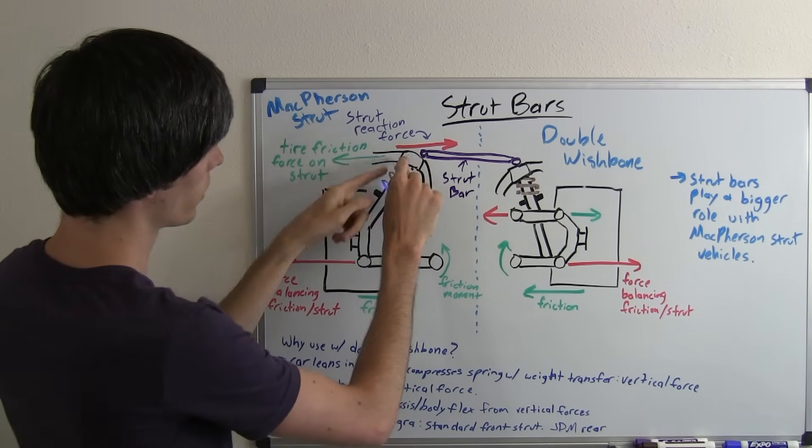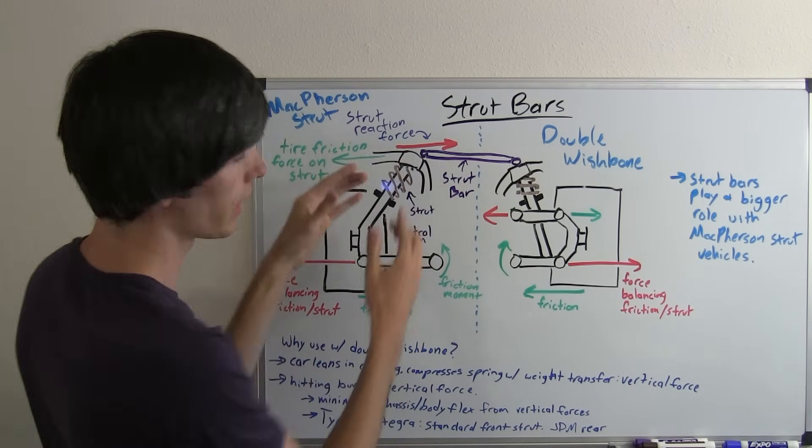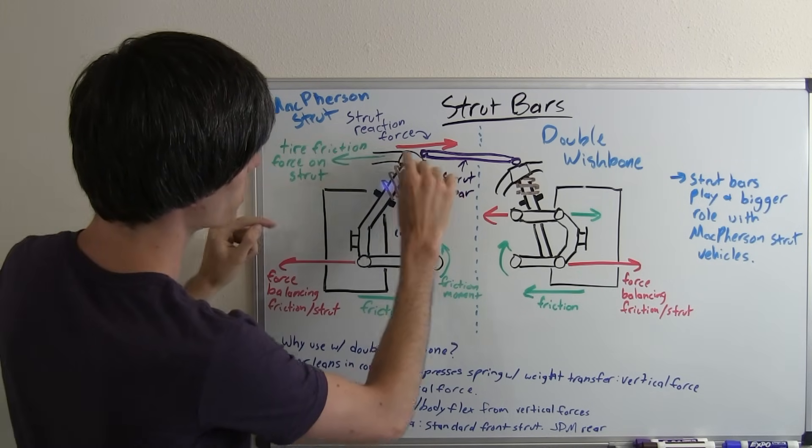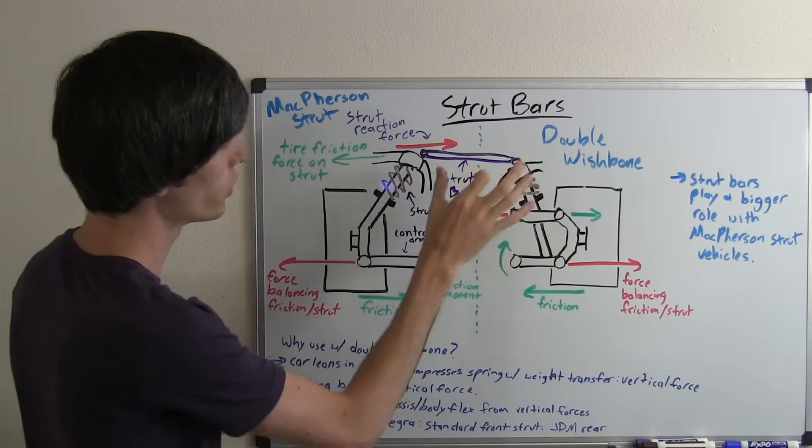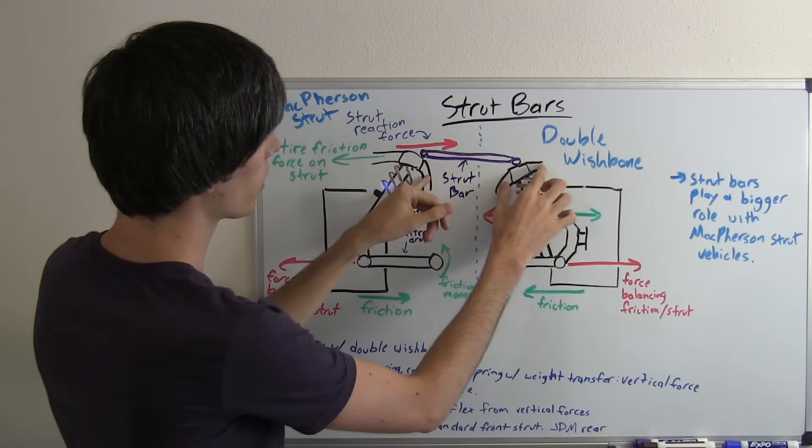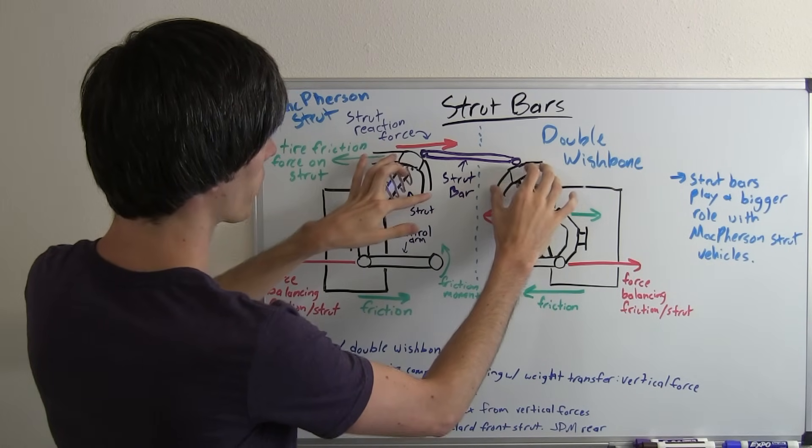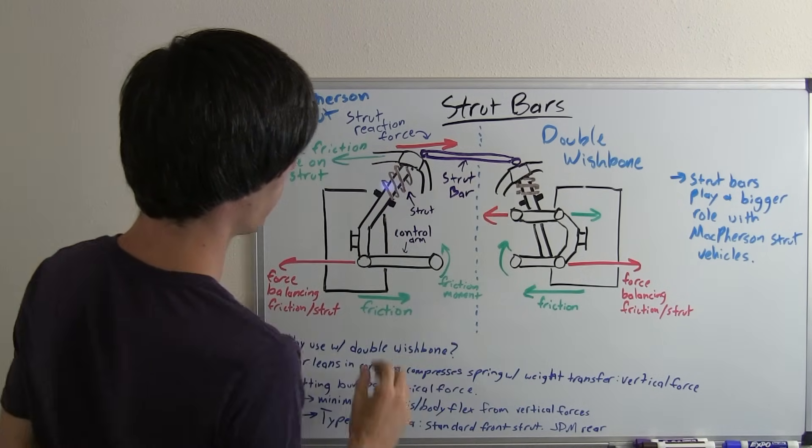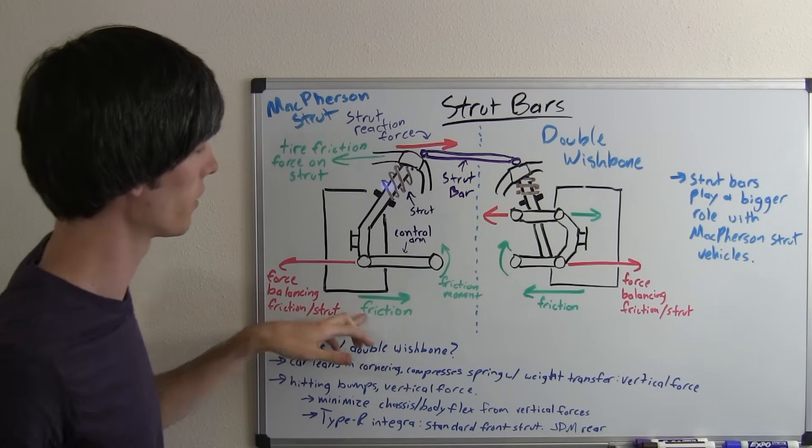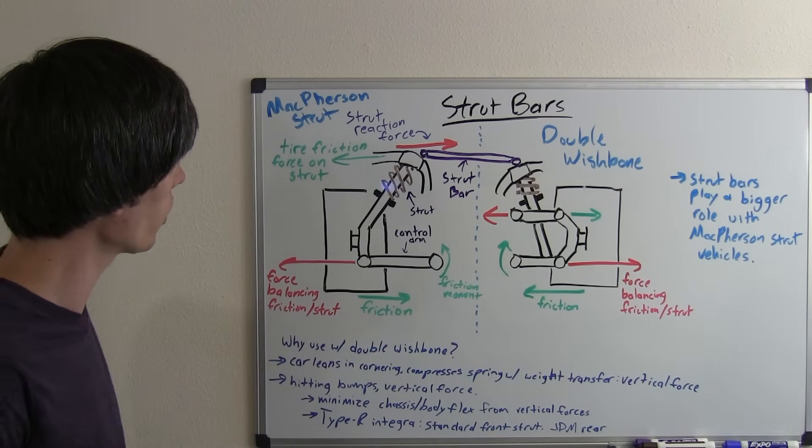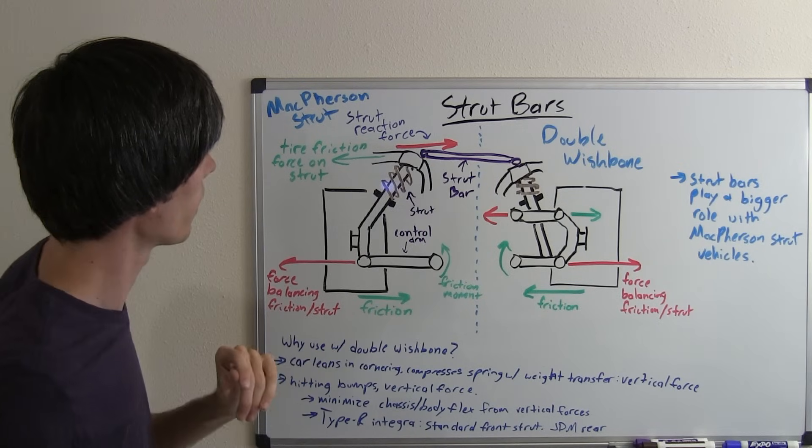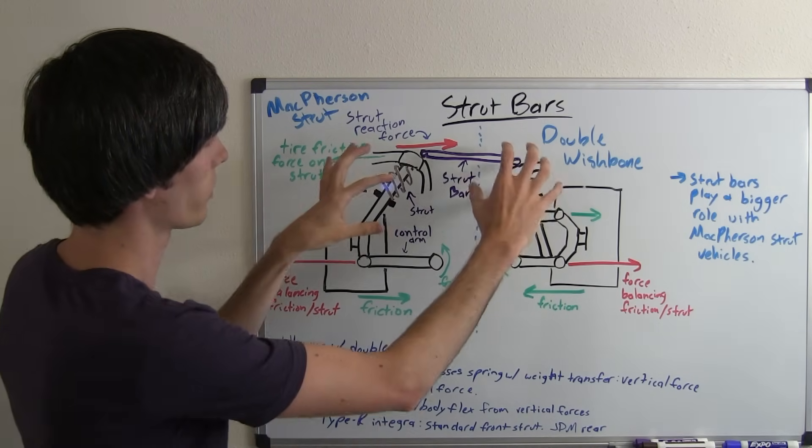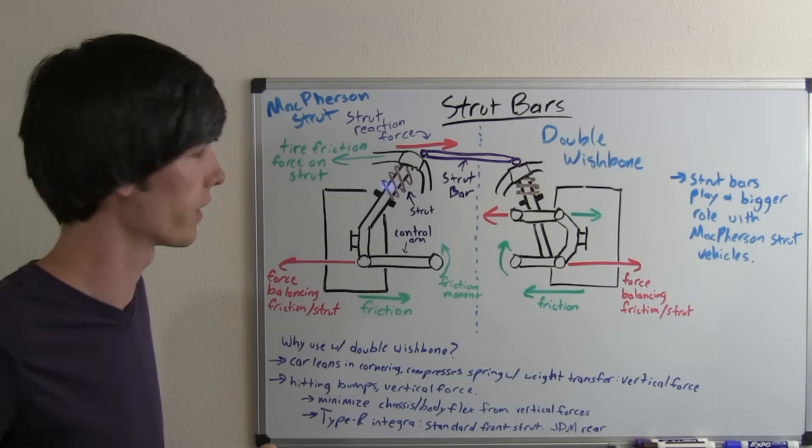That strut reaction force, if you don't have a strut bar you're just going to have the body of the car which is going to be the reaction force. If you do have a strut bar you're going to be using both sides, both towers of the car, and that force is going to pass along here and both of these towers are going to take that force opposing the friction. Once that has been cancelled out by two towers rather than one you're going to have less flex going on in the body of the car.